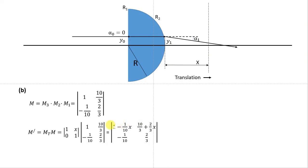As a function of X, the height above the optical axis changes with distance. Since there are no more refractive elements after the hemisphere, the alpha angle will not change. Looking at the matrix, only the height is a function of the distance X, while the C and D coefficients are not X-dependent, so alpha always stays the same after the system.